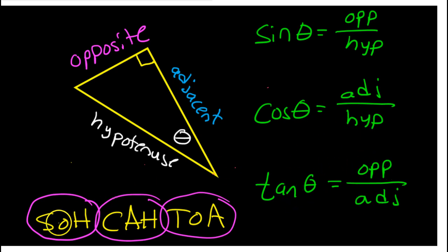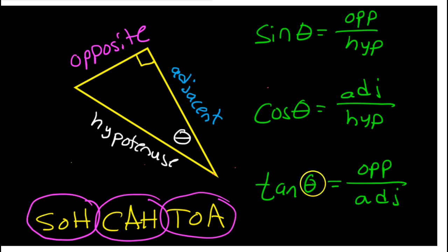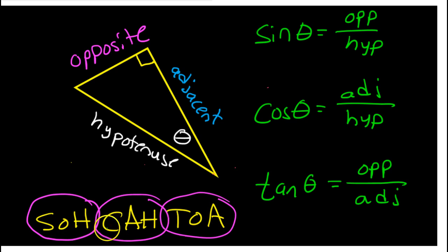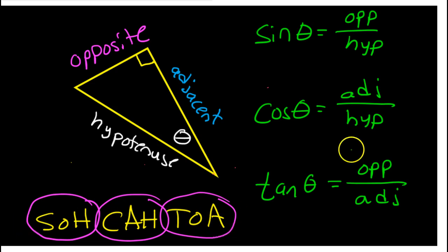To make it easier to remember, we will sometimes say just use SOH CAH TOA. That is the three definitions squeezed into one funny-sounding word, where SOH stands for sine is opposite over hypotenuse. CAH — that's cosine — is adjacent over hypotenuse. And TOA — tangent — is opposite over adjacent. So if you can remember SOH CAH TOA, then you can remember all of your definitions.